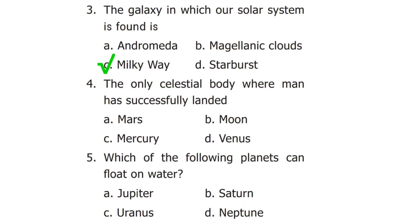The fourth question is: the only celestial body where man has successfully landed. We have four options. The answer is option B, Moon. The fifth question is: which of the following planets can float on water? The correct answer is option B, Saturn.